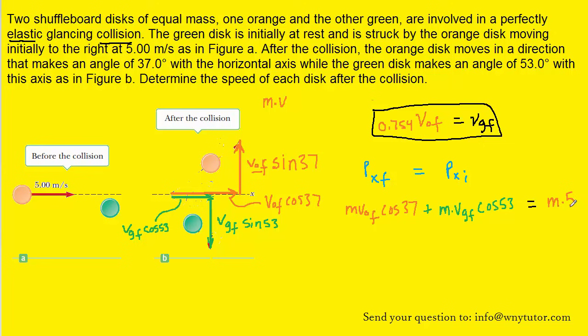Notice that the velocity of the orange disc initially was 5 meters per second, so we have 5 right here. As before, mass appears in all the terms of the equation, so we can eliminate it. Now what's nice about this equation, although it contains two unknowns, VOF and VGF, we recall that we came up with an expression earlier for VGF, so we can actually make a substitution whereby we take this term and plug it in right there for the VGF.